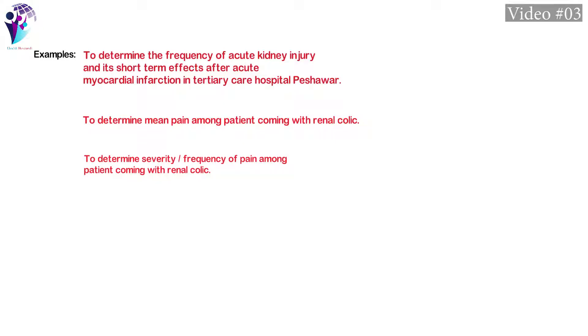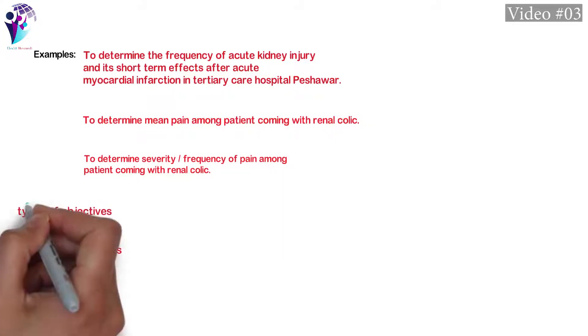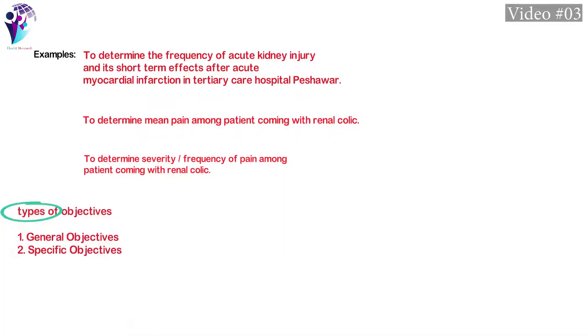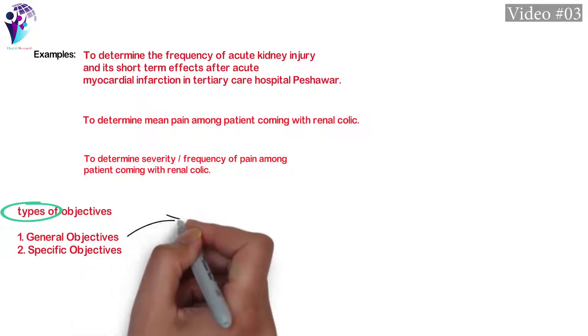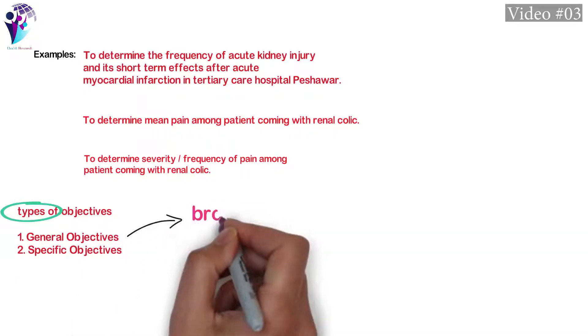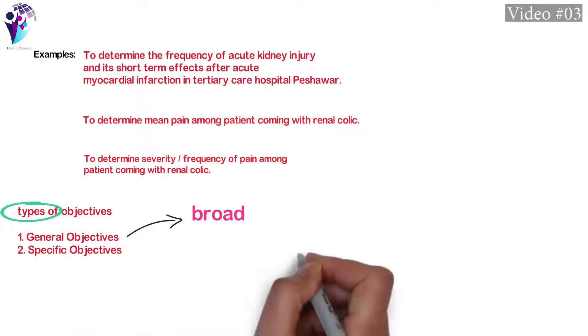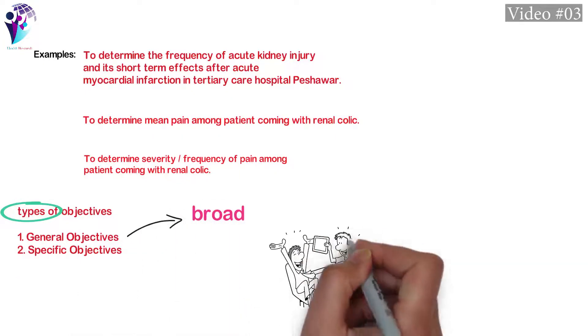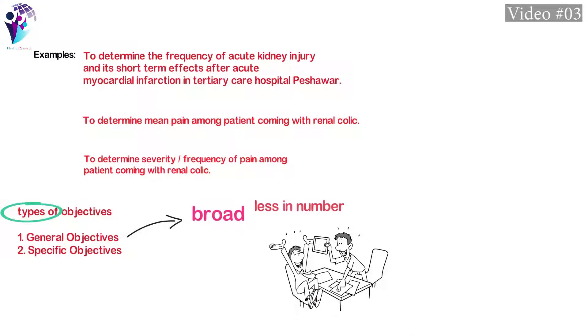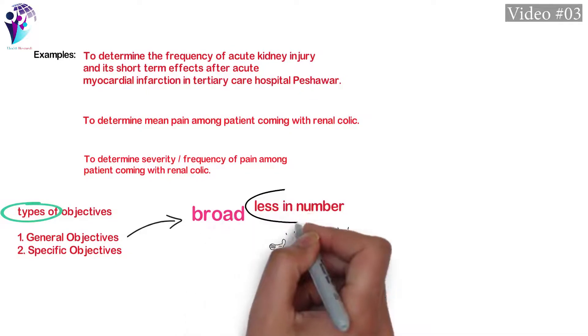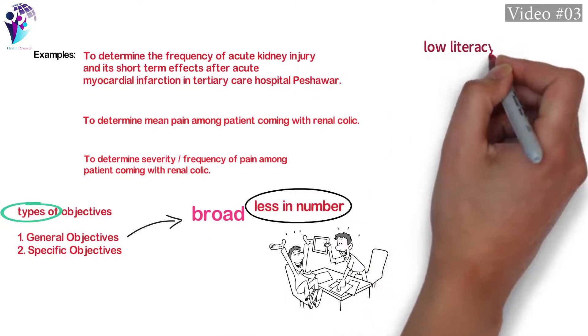There are two different types of objectives. General objectives are broad goals to be achieved. The general objectives of the study state what the researcher expects to achieve by the study in general terms, and these are usually fewer in number.